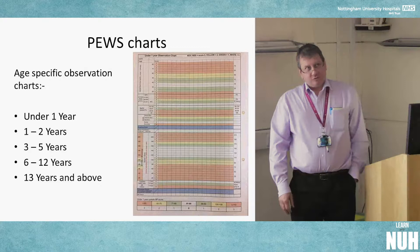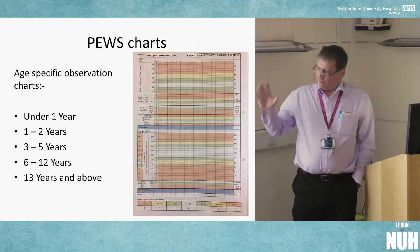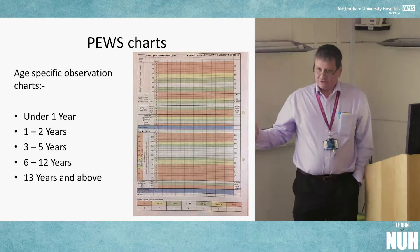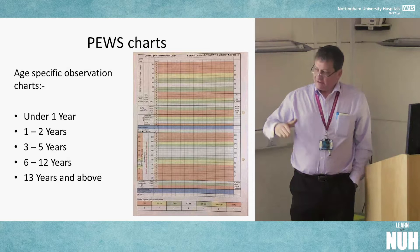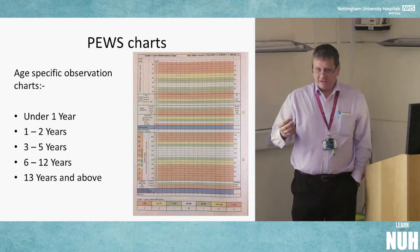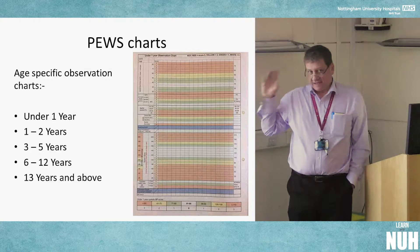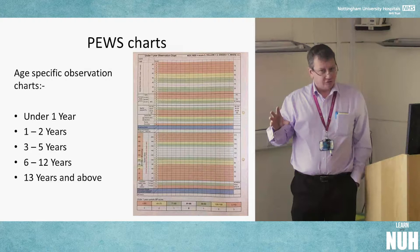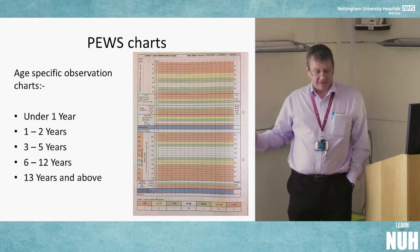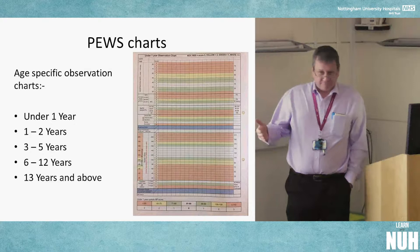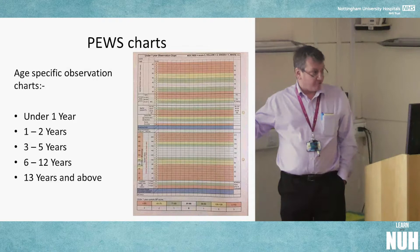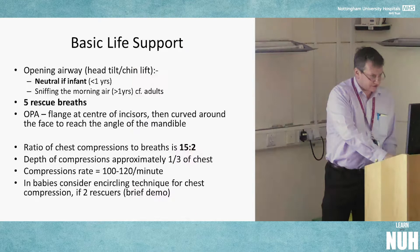People often get worried about what the normal heart rate is for a 1-2 year old child. We've got these great PEWS charts — paper-based versions as well as on iPod touches — with various age-specific categories, colour-coded green, yellow, and red. We are as a trust changing over to NEWS2 for adults, but the PEWS charts are staying the same. They're great for showing how abnormal parameters are for a particular patient.